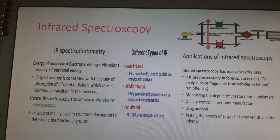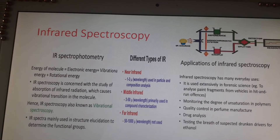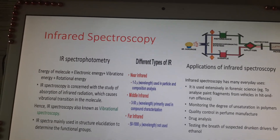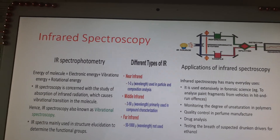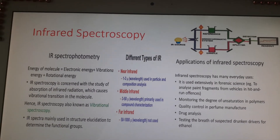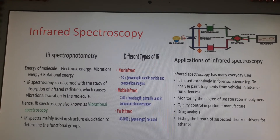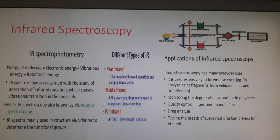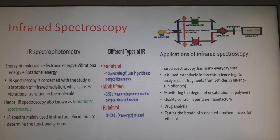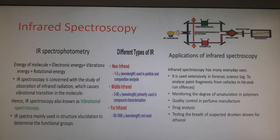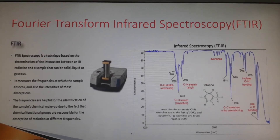IR spectroscopy is used to show what types of bonds are present in a sample by measuring different types of interatomic bond vibrations at different frequencies. It relies on the fact that molecules absorb specific frequencies which depend on their chemical structure.